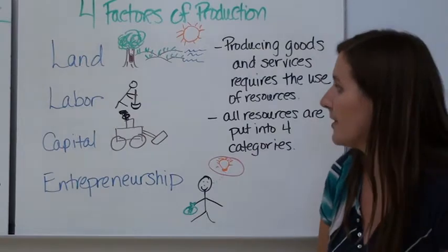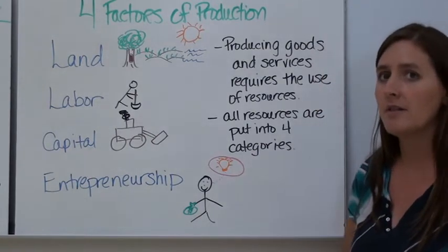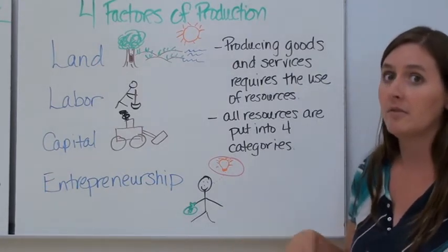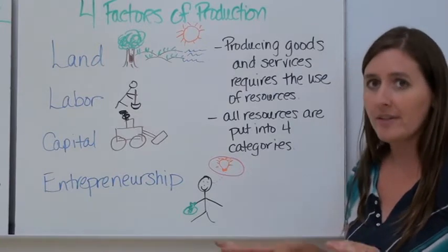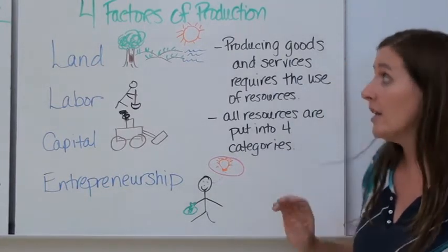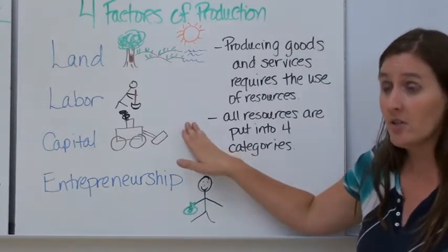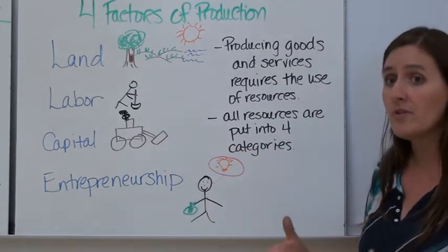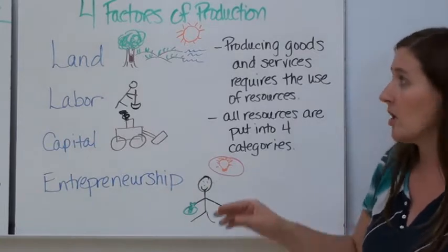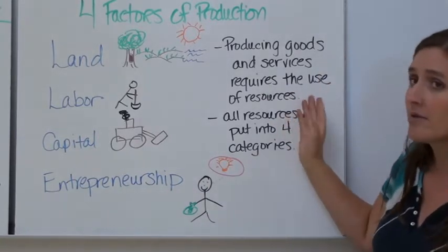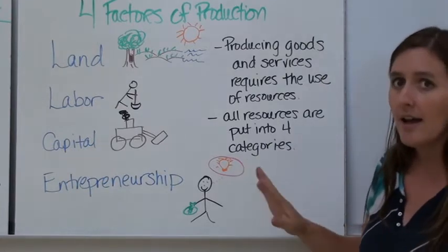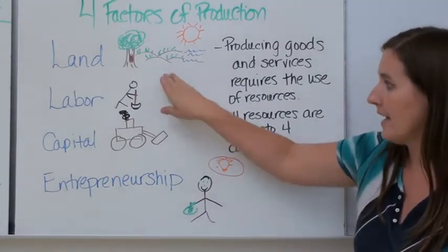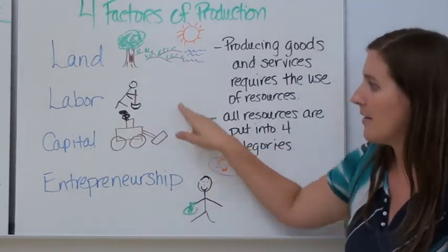The last set of vocabulary is the four factors of production: land, labor, capital, and entrepreneurship. You may remember these from studying the Industrial Revolution. These are the resources that go into producing goods and services — anything that goes into making a product falls into one of these four categories.